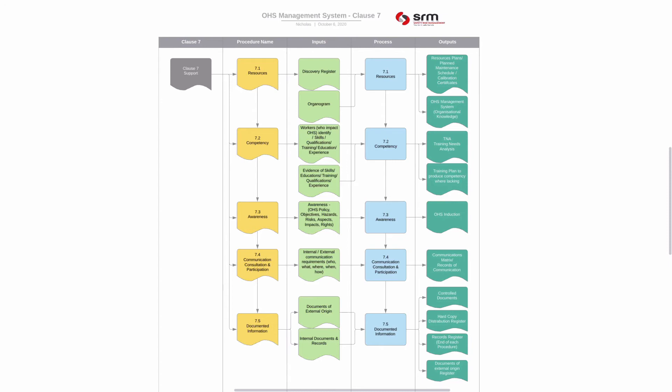For competency, I would have a process identifying all skills requirements for various workers, with evidence of skills and training. Outcomes of that competency process could include a training needs analysis, a training plan, training certificates and qualifications, and planned task observations where someone observes a trained worker to assess the effectiveness of actions taken.